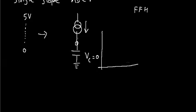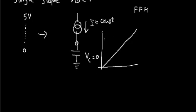If you actually draw the waveform, it will be growing linearly because current is constant. When the current is constant, which is charging the capacitor, the capacitor voltage charges linearly. This is the time axis and this is the Vc.